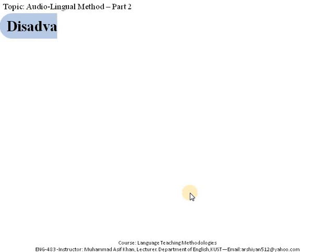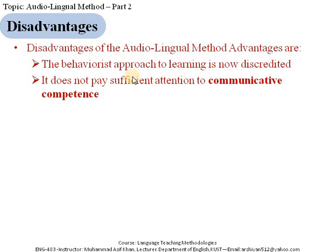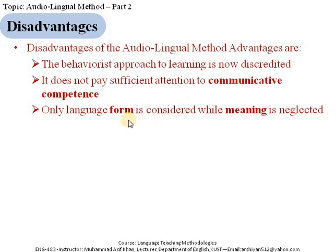The audio-lingual method has some disadvantages. The behaviorist approach to learning is now discredited and many scholars have proven its weaknesses. Since behaviorist learning theory is the foundation of this method, when that theory is discredited, the method is also discredited. In this method it does not pay sufficient attention to communicative competence — the speaking ability is developed in the student, but communicative competence is not developed, and sometimes students fail when they are communicating with someone.